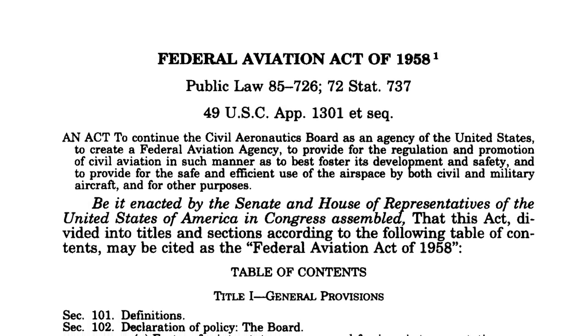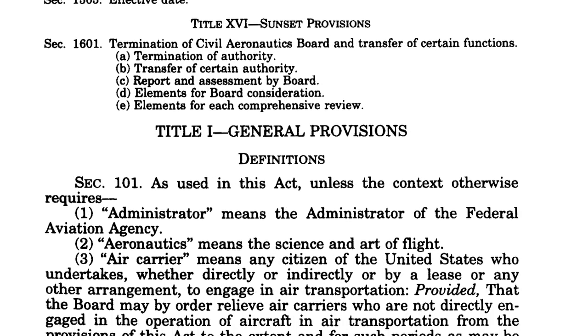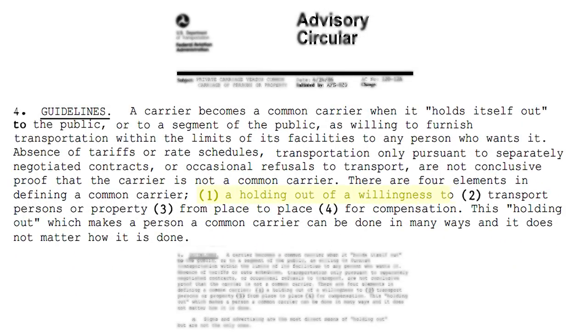In the Federal Aviation Act, there are dozens of terms defined, and there are actually terms that use 'common carrier' in their definition, yet Congress never defined the term 'common carrier.' That left it to the FAA to define and subsequently redefine over the years. In 1986, the FAA issued an advisory circular setting out what they believed to be the essential elements of a common carrier — someone holding themselves out for transport from place to place for compensation. The FAA has spent the last three decades redefining the term on the margins through legal interpretations.